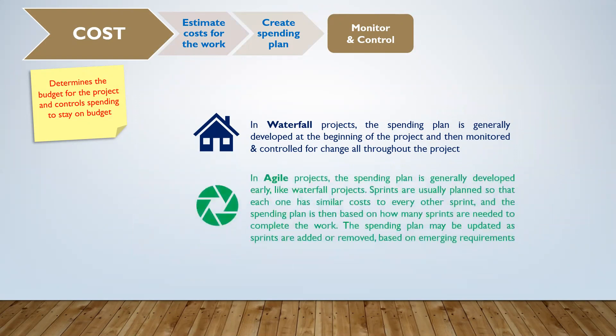In agile projects, the spending plan is generally developed early, like waterfall projects. Sprints are usually planned so that each one has similar costs to every other sprint, and the spending plan is then based on how many sprints are needed to complete the work. The spending plan may be updated as sprints are added or removed based on emerging requirements.